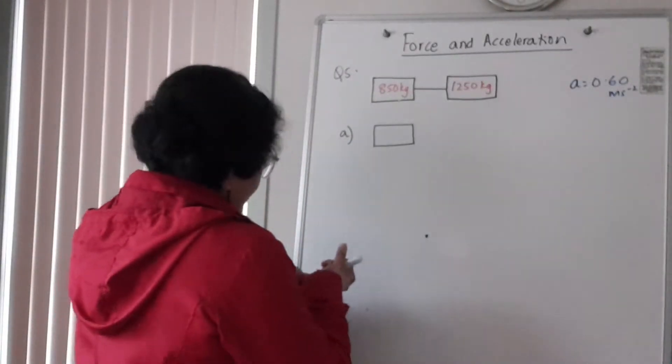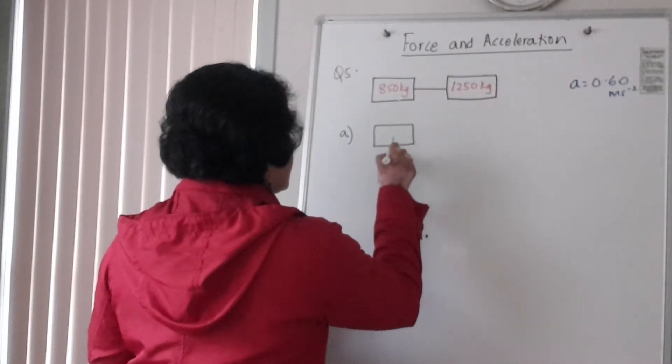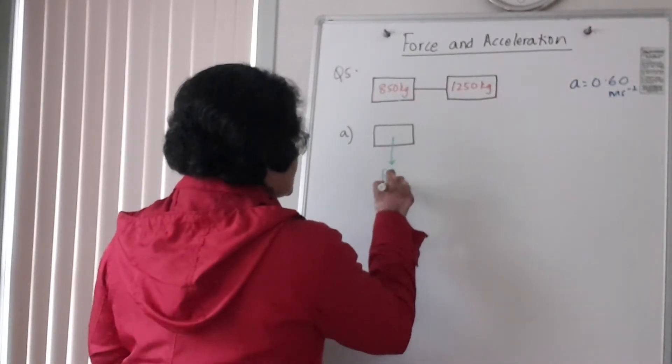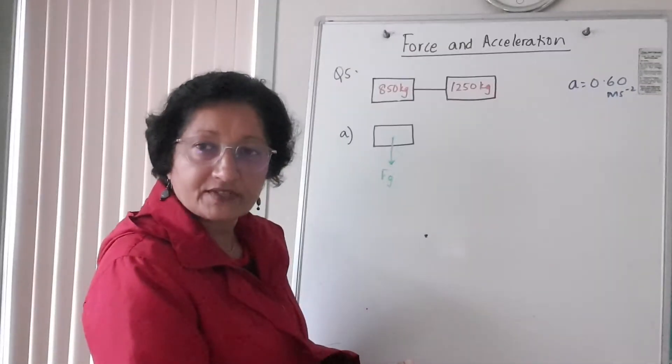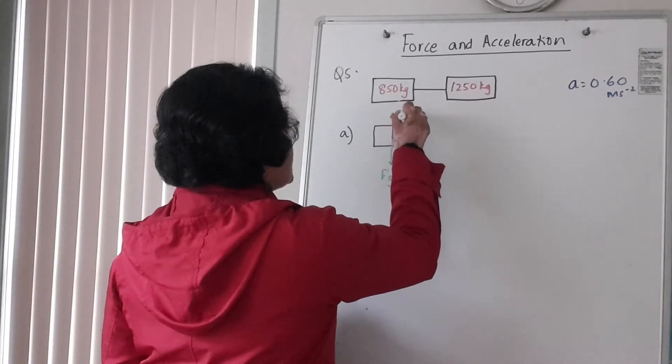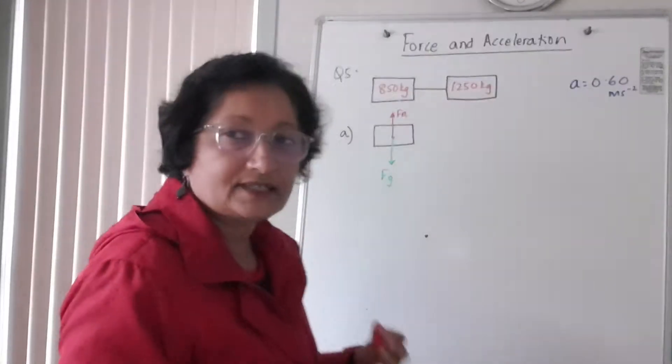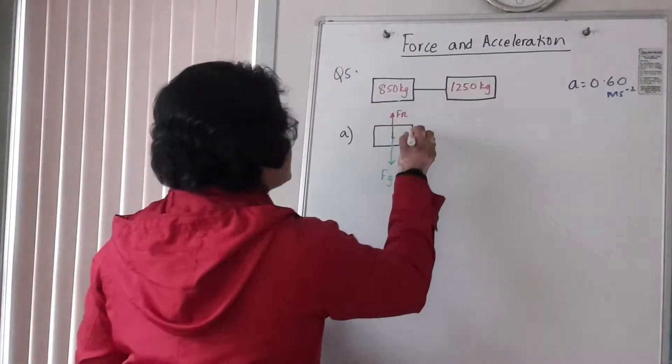You will have your gravity force acting vertically down, and then you have an equal and opposite reaction force from the ground acting up. So it's in vertical equilibrium, so those two forces cancel each other out.